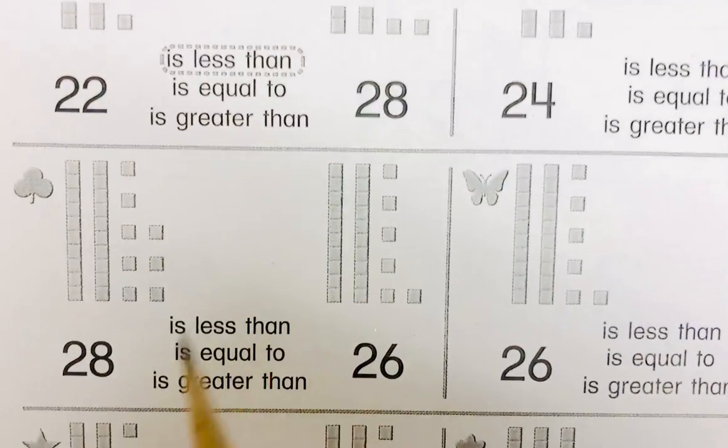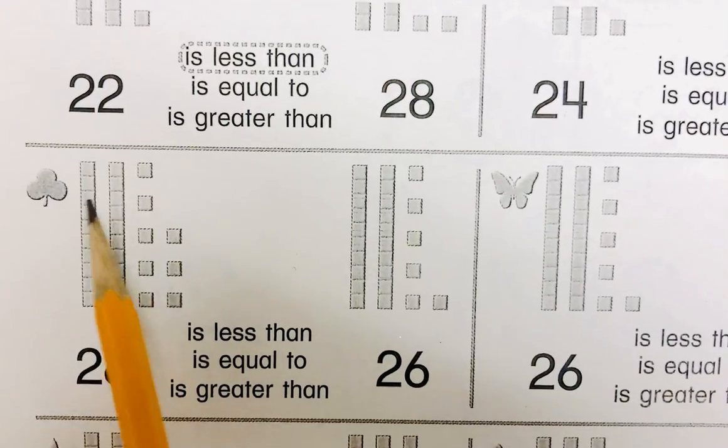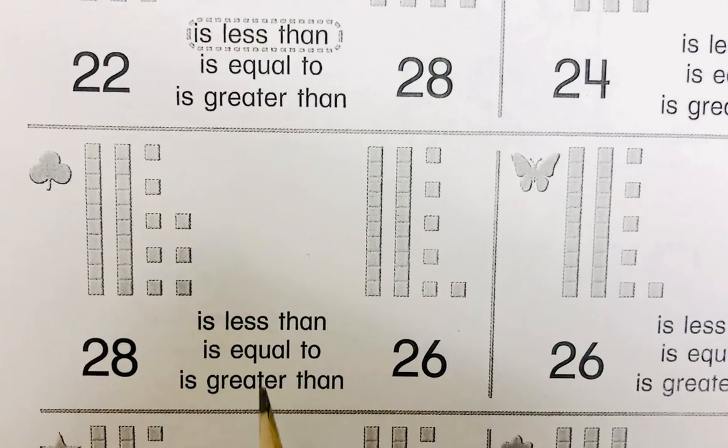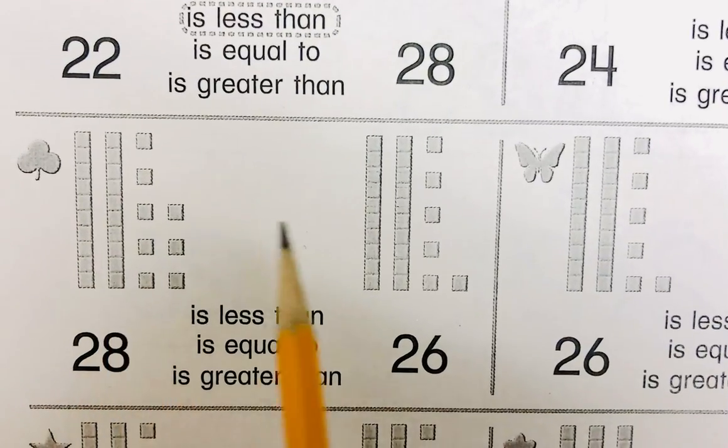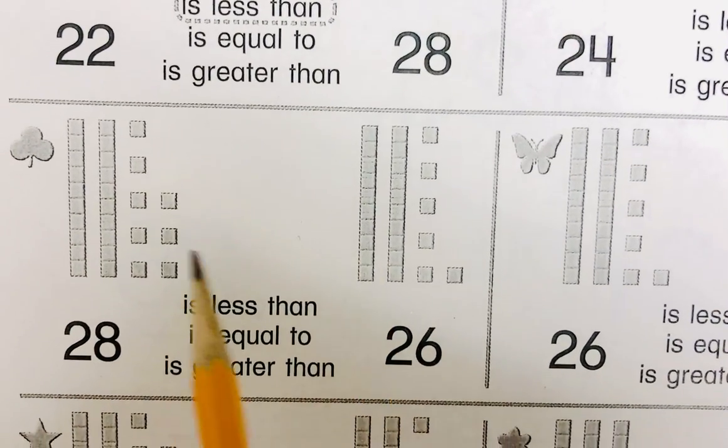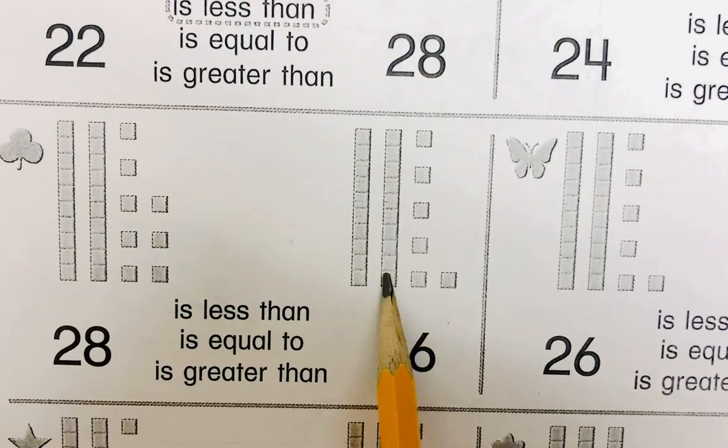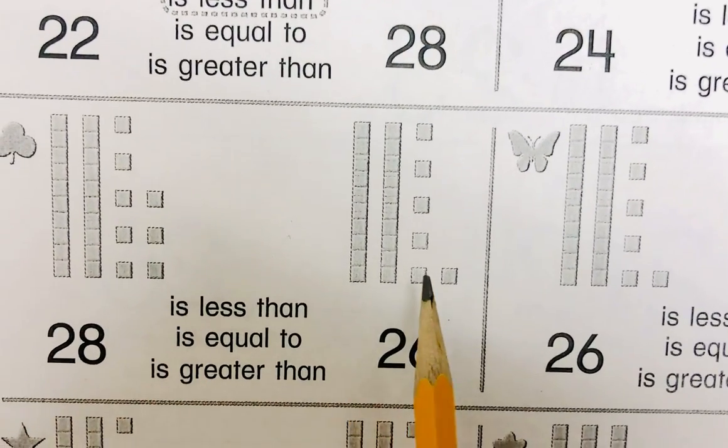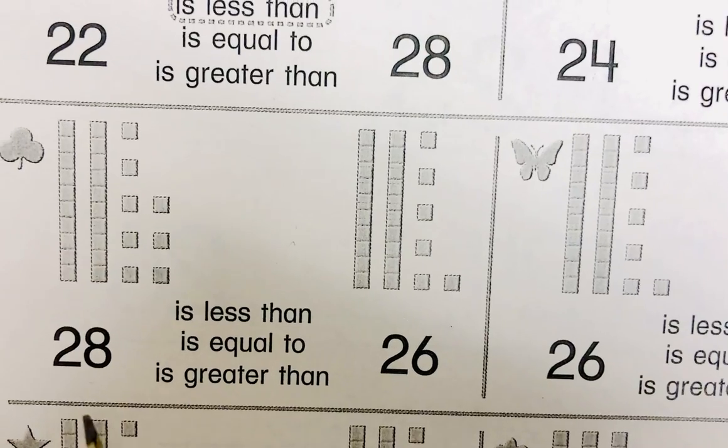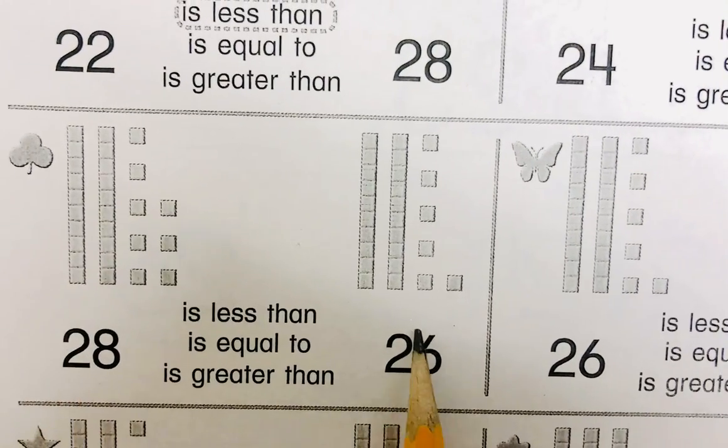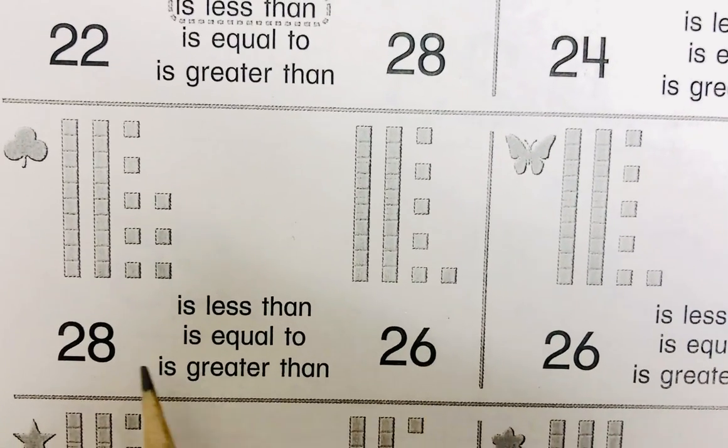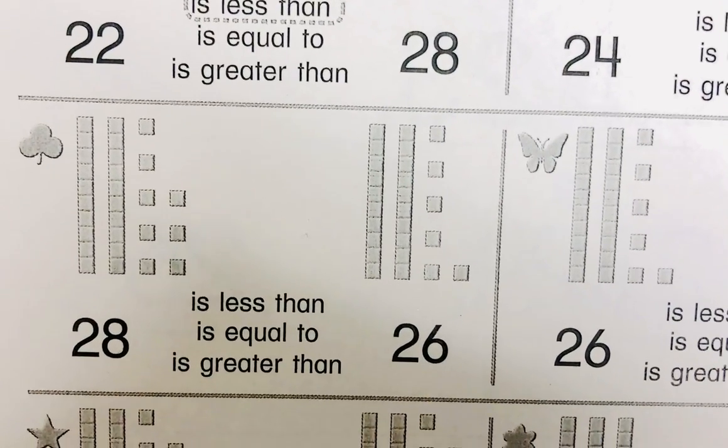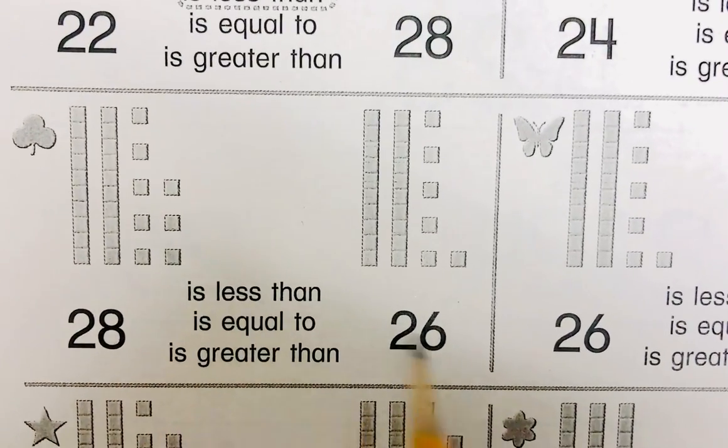Actually, let's do one more box together. And then you could do the last three boxes by yourself. Shamrock box. 28, 26. One group of 10, one group of 10. Second group of 10, second group of 10. Eight little ones, only six little ones. So two, two, eight, six. Eight little ones, six little ones.